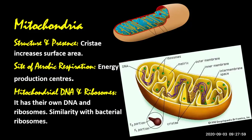Mitochondria is the powerhouse of our whole body at the cellular level. I must tell you about the structure and presence of mitochondria. It has two membranes — outer membrane and inner membrane. As you can see in this diagram, the outer membrane is smooth, while the inner membrane has infoldings.